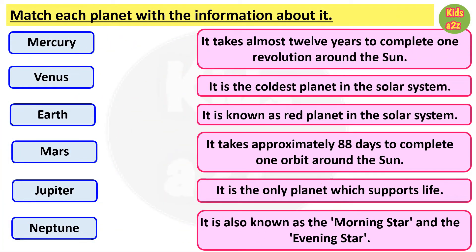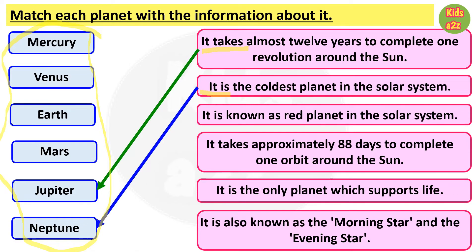Here kids need to match each planet with the information about them. On the left hand side names of some planets are given and on the right hand side their information is given. First one: it takes almost twelve years to complete one revolution around the Sun — they need to match it with Jupiter. Number two: it is the coldest planet in the solar system — they need to match it with Neptune.